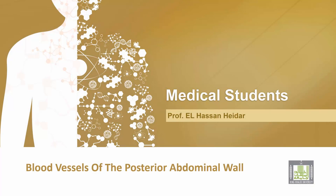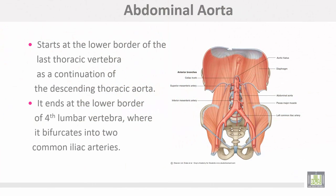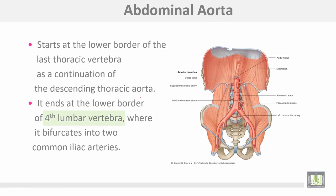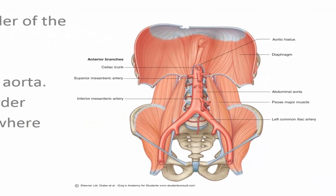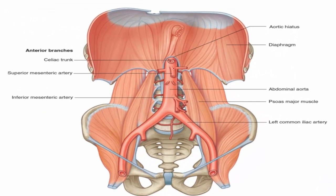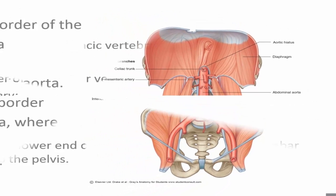Blood vessels of the posterior abdominal wall begin with the abdominal aorta. It starts at the lower border of the last thoracic vertebra as a continuation of the descending thoracic aorta, and ends at the lower border of the fourth lumbar vertebra, where it bifurcates into the two common iliac arteries.